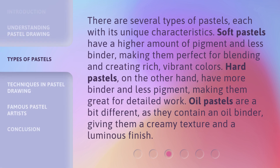There are several types of pastels, each with its unique characteristics. Soft pastels have a higher amount of pigment and less binder, making them perfect for blending and creating rich, vibrant colors. Hard pastels, on the other hand, have more binder and less pigment, making them great for detailed work. Oil pastels are a bit different, as they contain an oil binder, giving them a creamy texture and a luminous finish.